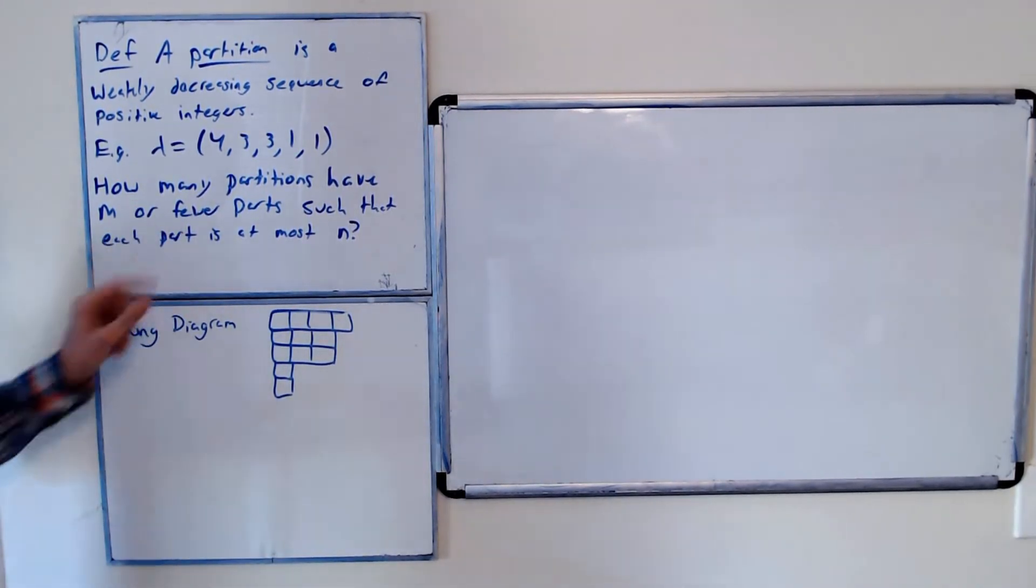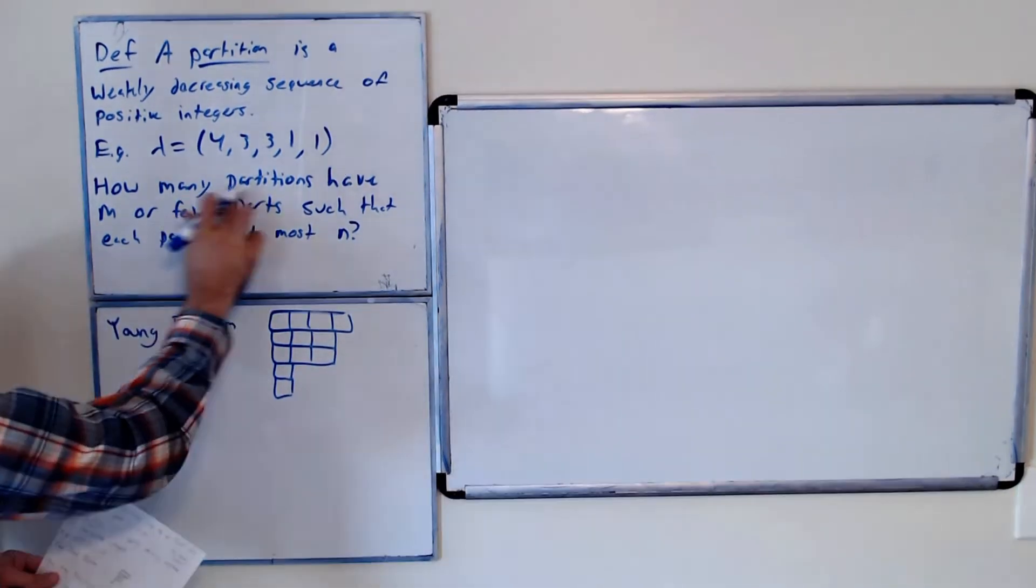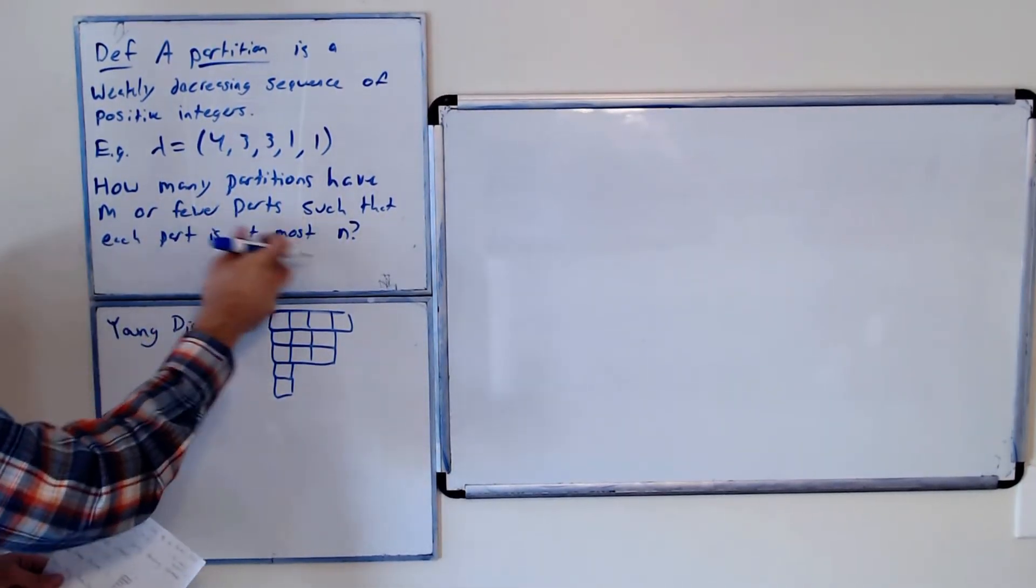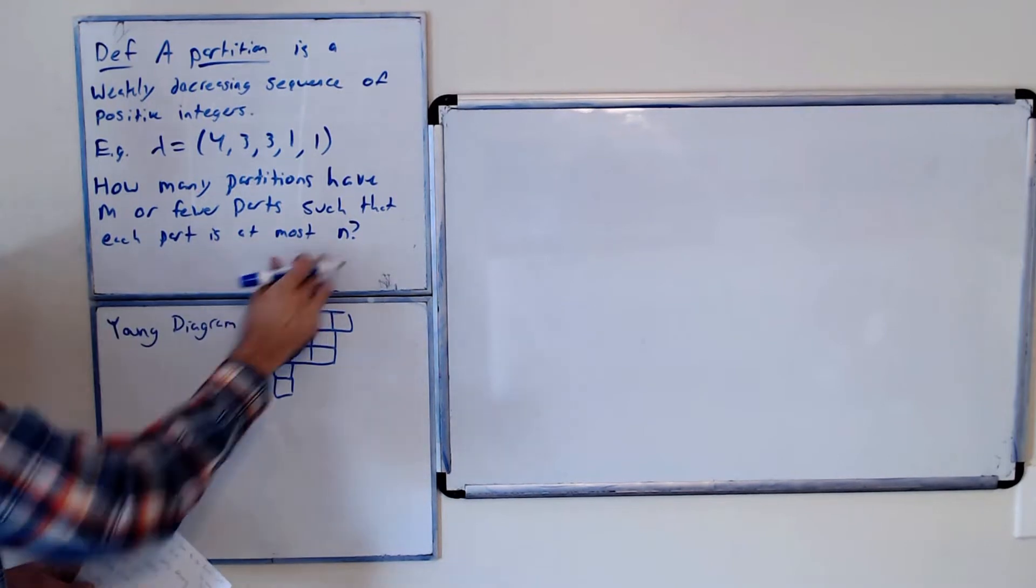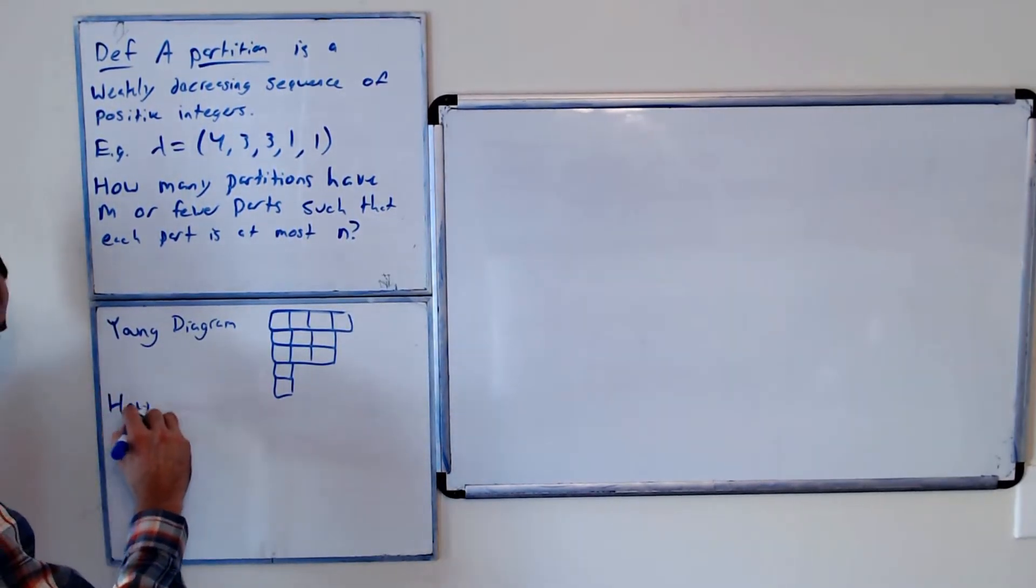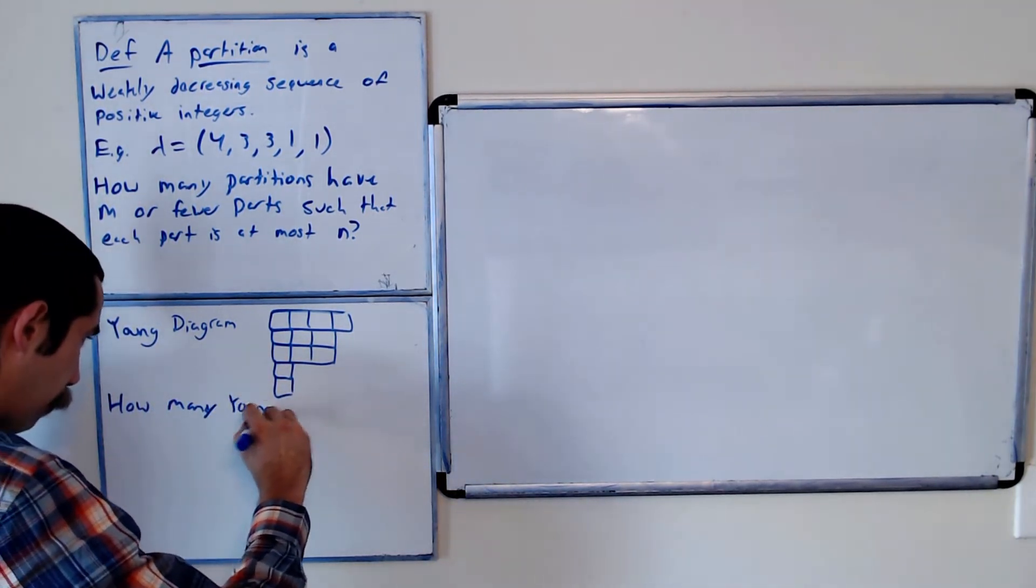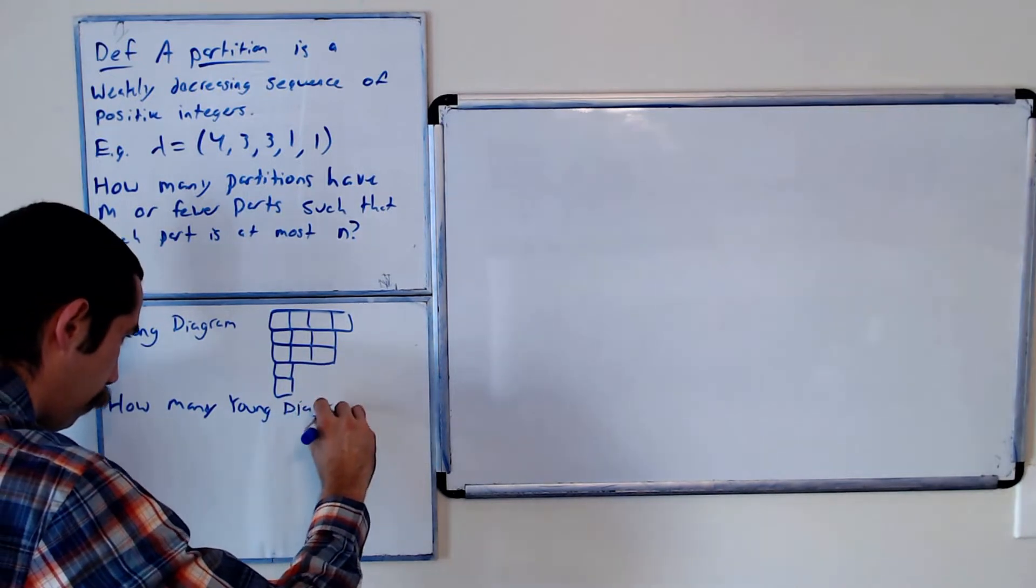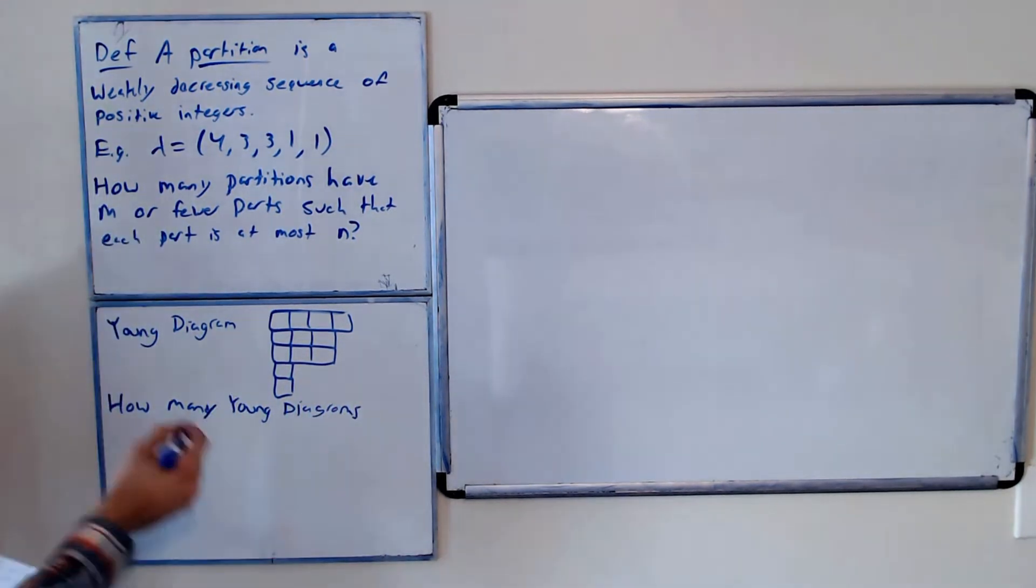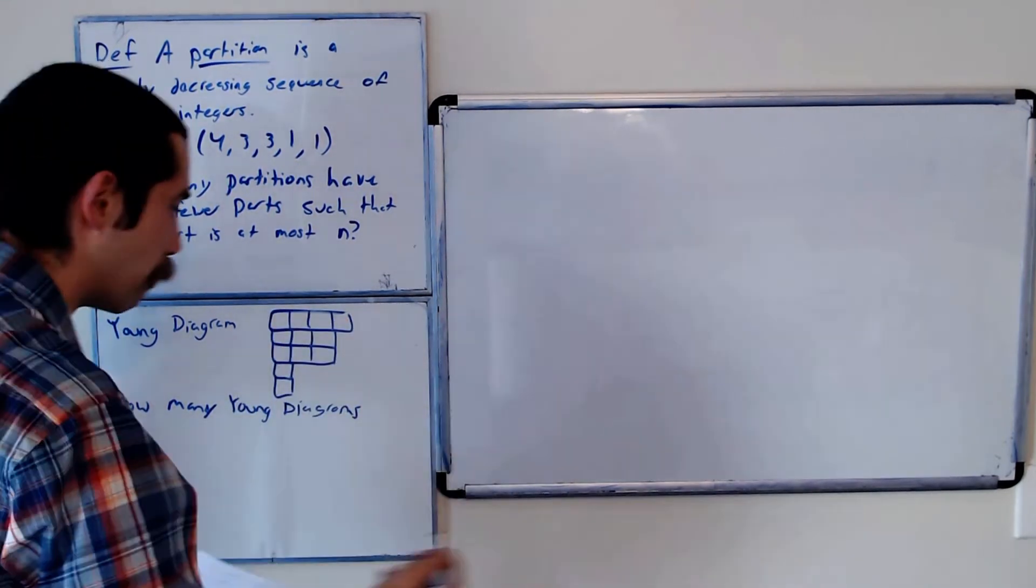We can restate our question: instead of saying how many partitions have M or fewer parts such that each part is at most N, we could say how many Young diagrams fit in an N by M box.